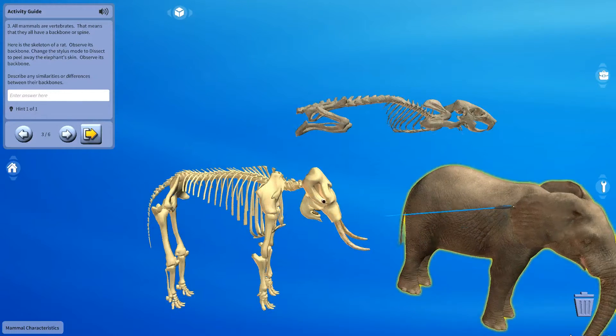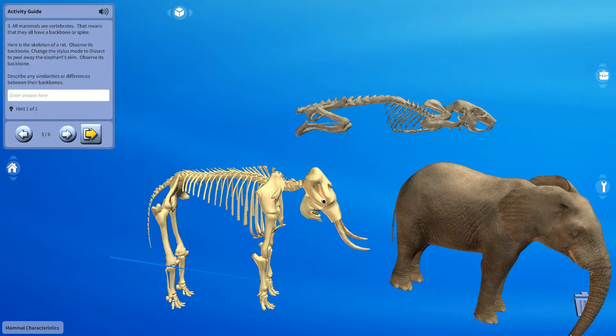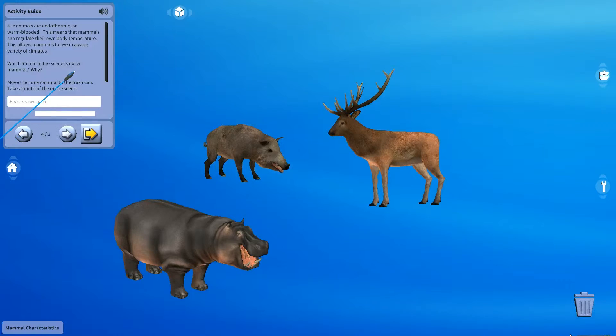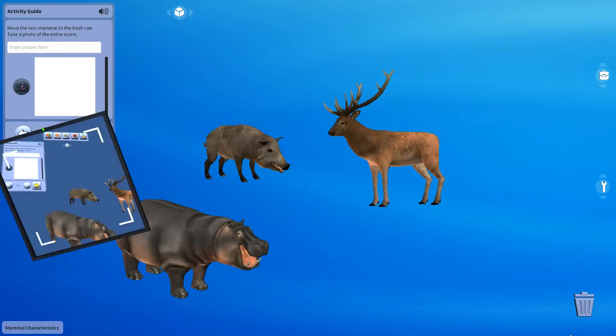Mammals come in all shapes and sizes and live in a variety of habitats. In this activity we will investigate the common features of mammals, including their adaptations to survive in specific environments.